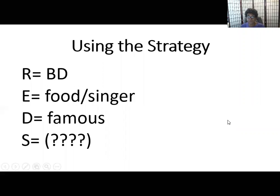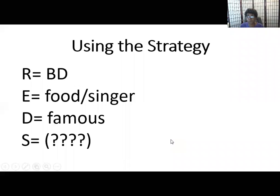The most important thing is to use the REDS strategy. So here's my REDS strategy. I know that it is about a birthday, so I'm going to write 'food' and 'singer' beside E as my example. D is going to be 'famous,' and then S is to summarize what you were talking about. If you're able to do that you'll be able to answer the prompt about a party that you enjoyed.